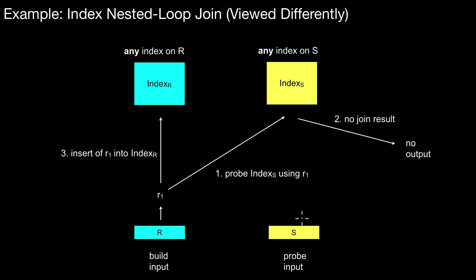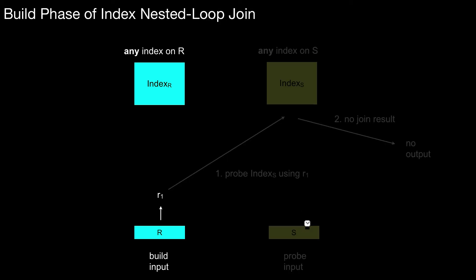The difference is in index nested loop join we do not draw alternately from the two inputs. Rather we first build up one of the indexes, called the built input. In simple hash join this index is a hash table. We draw all the elements first from this input relation R and input it into that index. We keep on looping until all of this is exhausted.